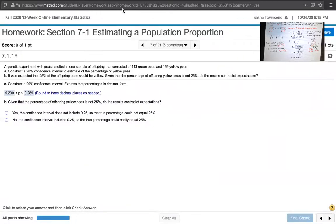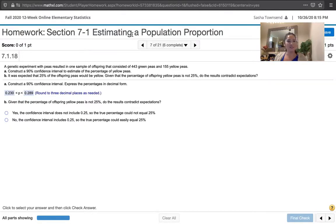Now the second part of the question says, given that the percentage of offspring yellow peas is not 25%—and that was our expectation, that the percentage of yellow peas would be 25%—do the results contradict expectations? Well, if we're trying to decide whether or not those expectations are contradicted, we have to see if 0.25, the corresponding proportion to that 25%, is between this lower bound and this upper bound. And 0.25 is between 0.23 and 0.289. So no, it does not contradict expectations because the interval includes 0.25. So the true percentage could easily equal 0.25 or 25%.